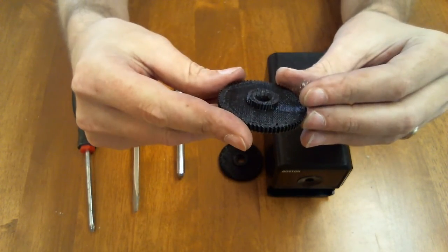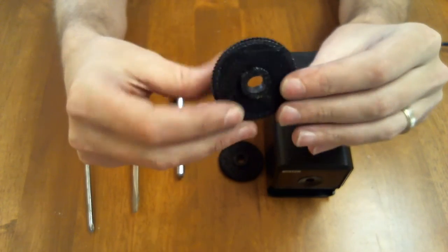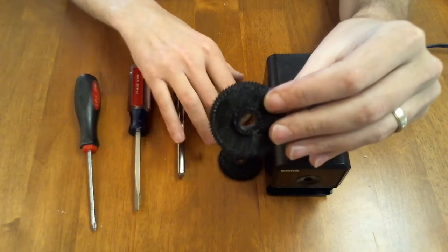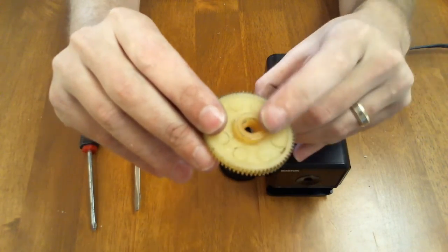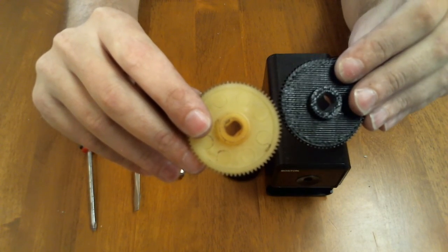Some of the problems I noticed with it right away were that you had to basically file out this hole here in order to get it to fit properly on the shaft inside the pencil sharpener, which was very annoying. If you look at the original gear, you'll also see that it's countersunk right here, which the one on Thingiverse is not.